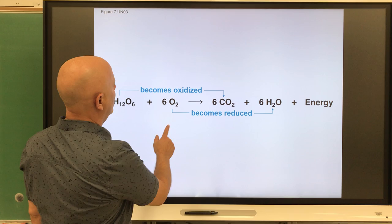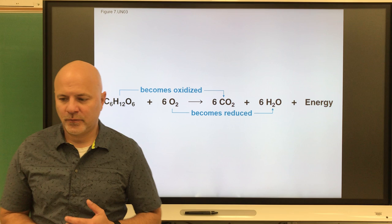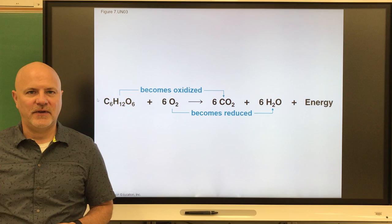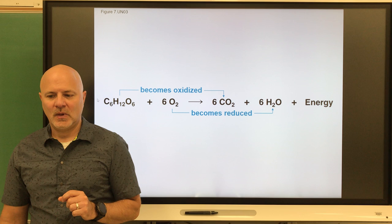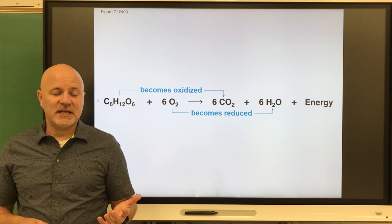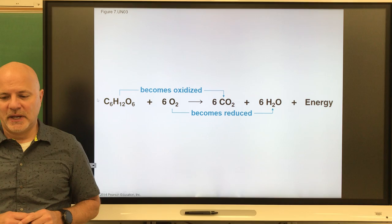Aerobic respiration is the extraction of energy from glucose in the presence of oxygen. We take glucose with six molecules of oxygen, producing six molecules of carbon dioxide, six molecules of water, and it produces energy or ATP. Aerobic respiration makes anywhere from 30 to 32 ATP, which is only 40% of the energy that's in a glucose molecule.